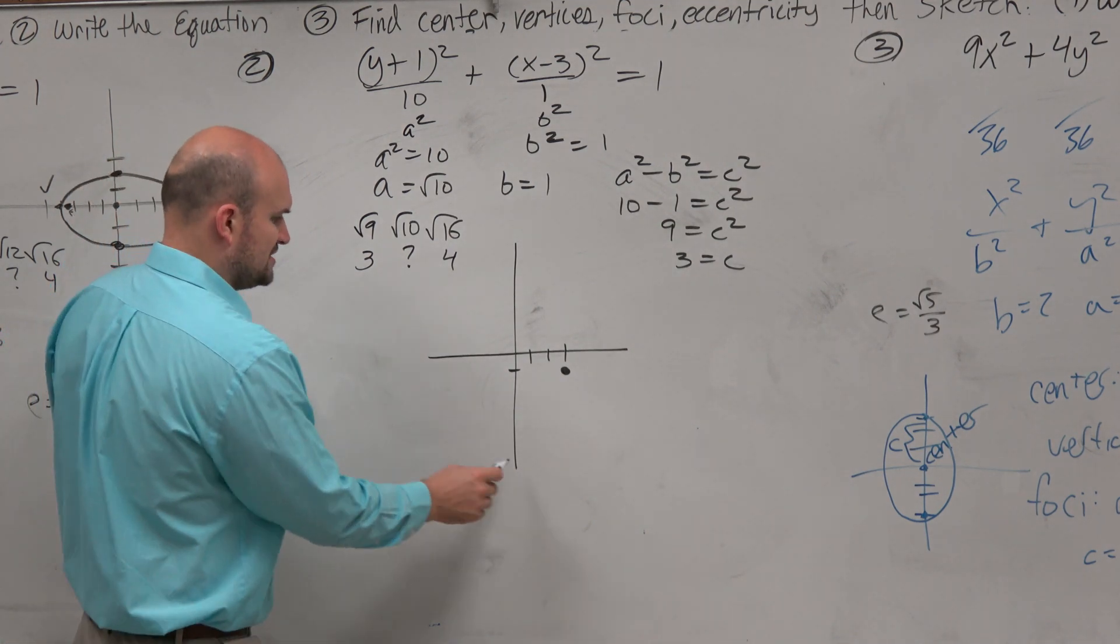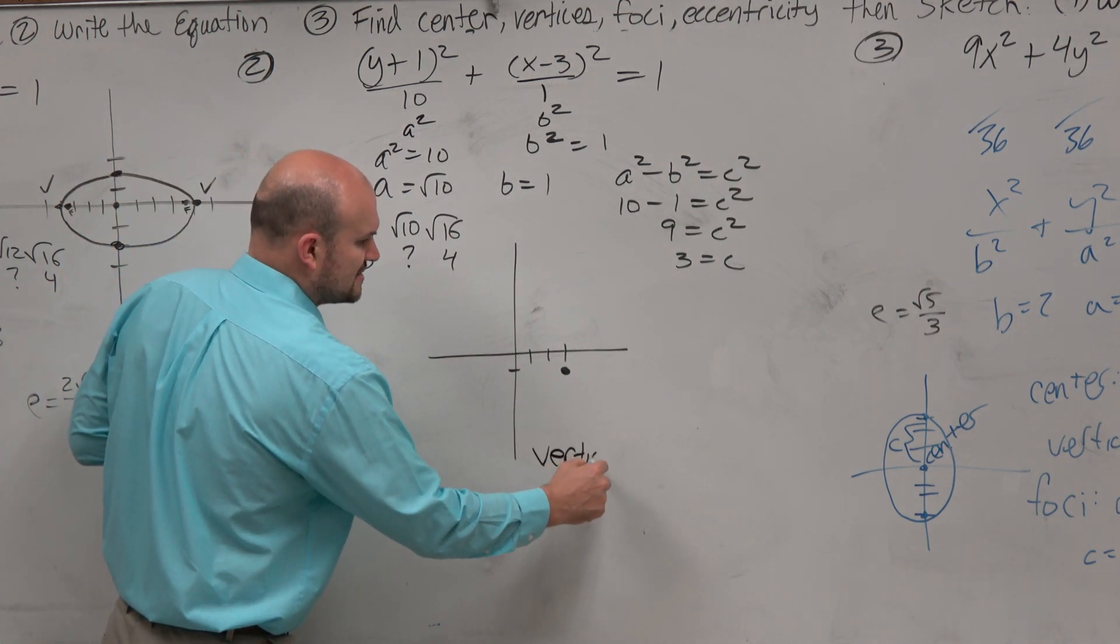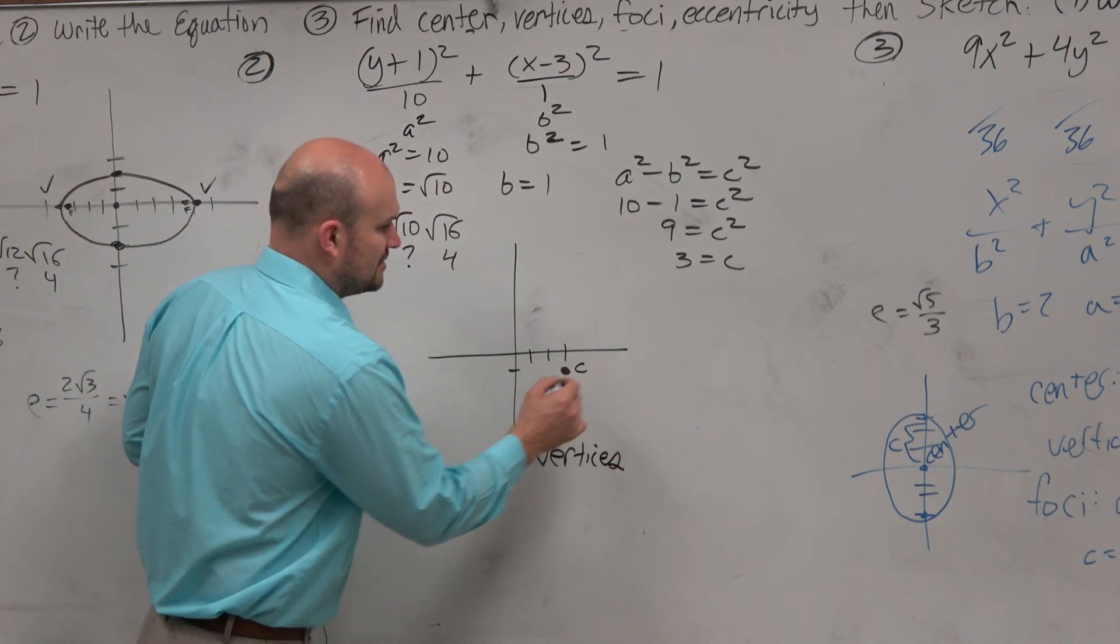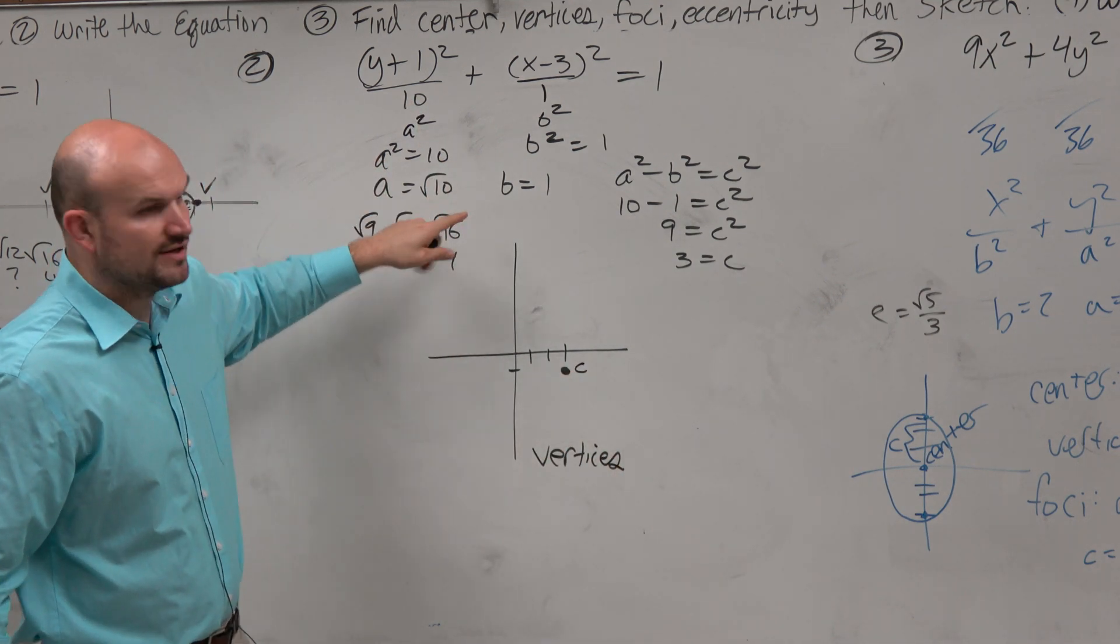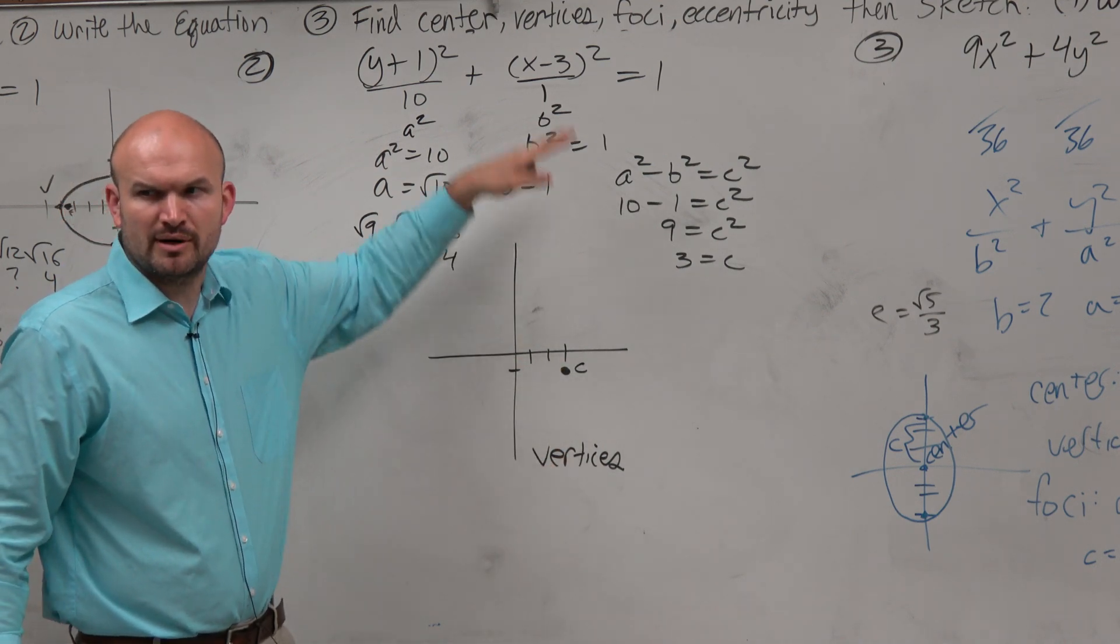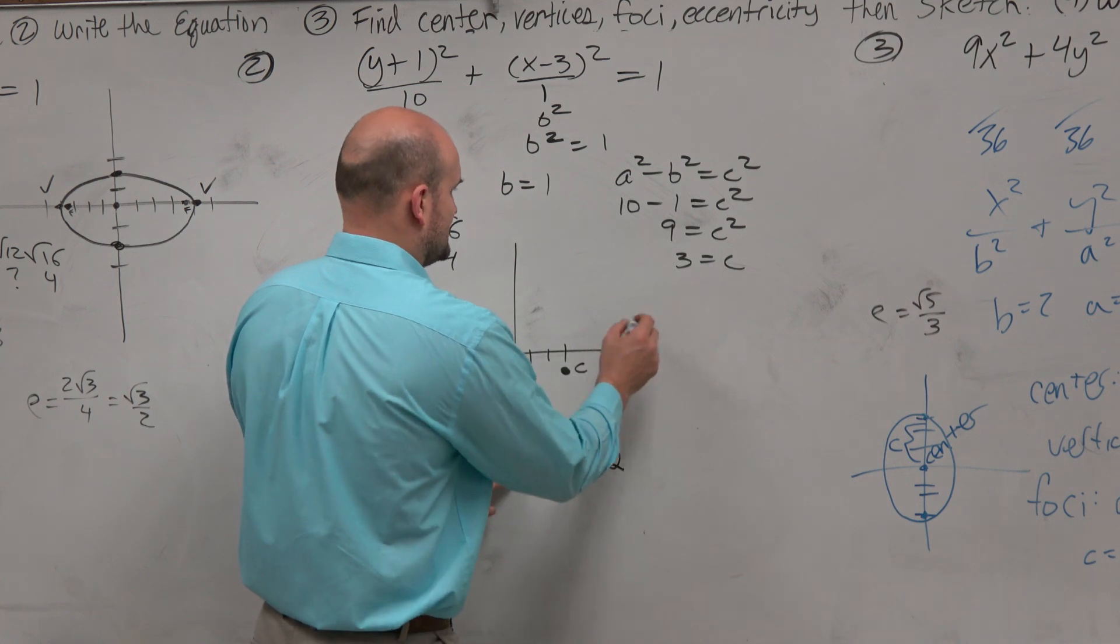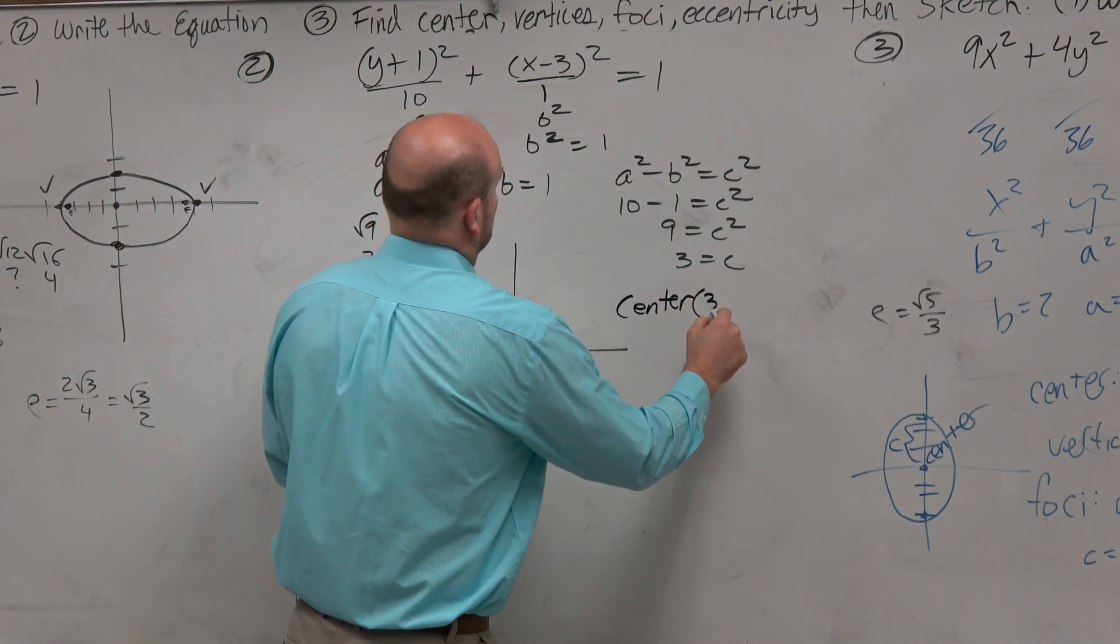Now let's just write down the vertices before we sketch them. So the vertices, again, we're going up and down. Here's the center. So we should be adding the square root of 10 to the y-coordinate, right? So therefore, this would be, so the center is 3, negative 1.